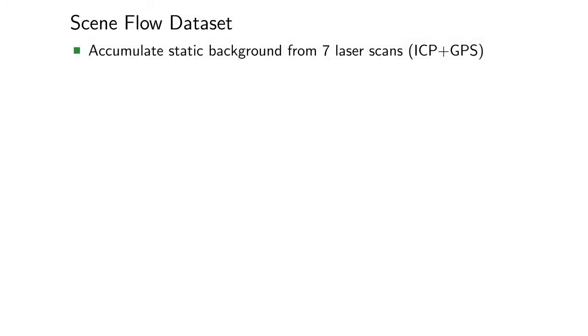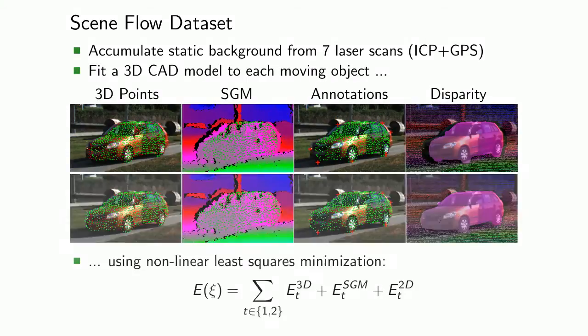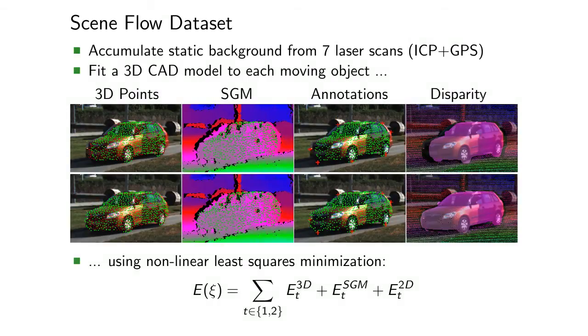Aside from our model, we propose a novel scene flow dataset and ground truth, which we derive from the KITI raw dataset. In contrast to previous realistic scene flow datasets, our dataset comprises independently moving objects. Similarly to the KITI stereo and flow dataset, we accumulate the static background using seven adjacent laser scans. In addition, we fit accurate 3D CAD models to all moving objects.